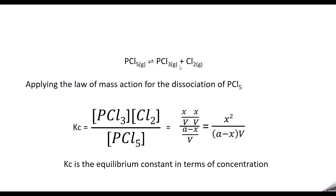PCl5 dissociates to form PCl3 and Cl2. Applying the law of mass action for this equation, when we write Kc — the derivation of which was discussed in the first video — Kc equals the products in the numerator. The products are PCl3 and Cl2, so we write the concentration of PCl3 times concentration of Cl2, divided by the concentration of the reactant PCl5.